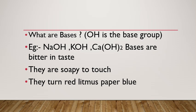The next characteristic of bases, which is the test for a base, is they turn red litmus paper blue. When you dip the indicator, that is red litmus, in any base, immediately the color changes from red to blue. This is the very important test for a base.